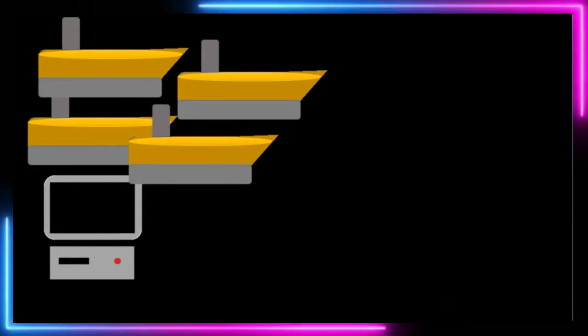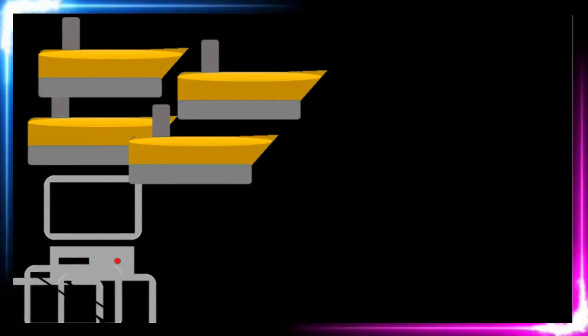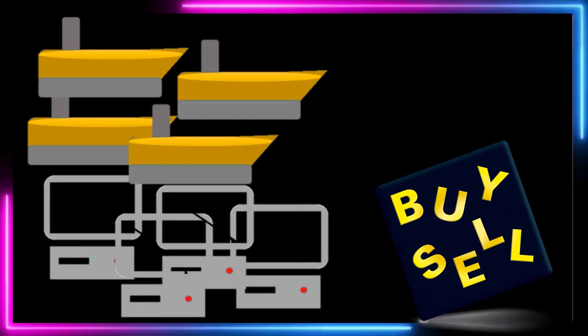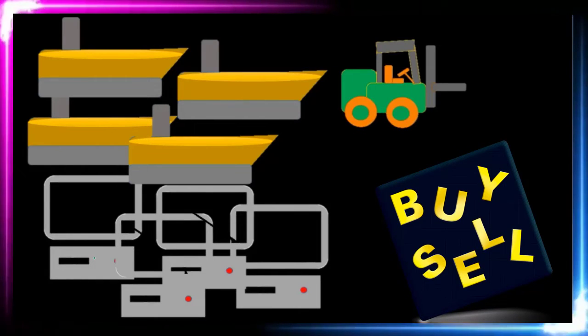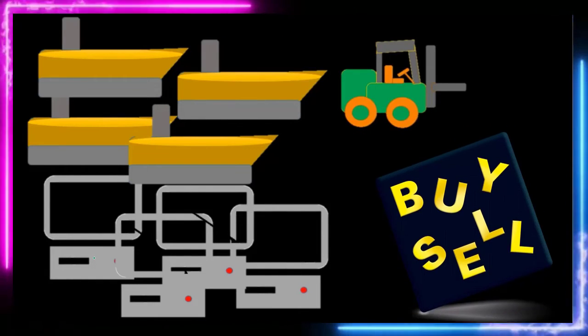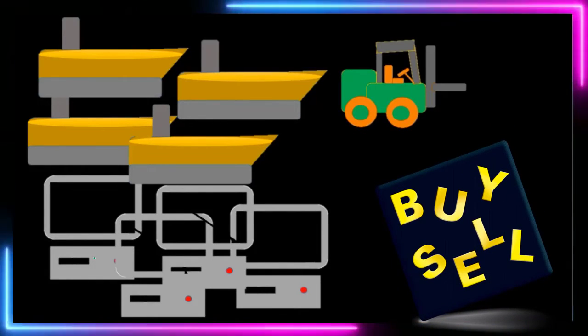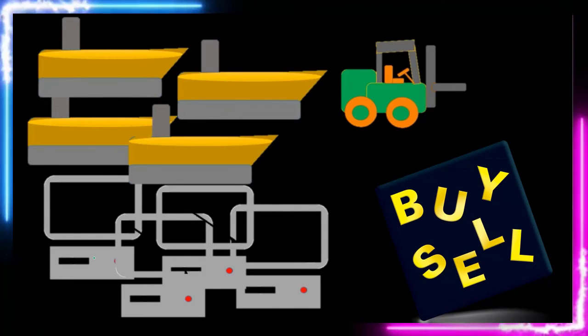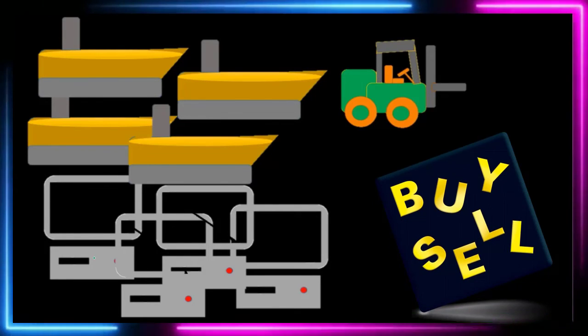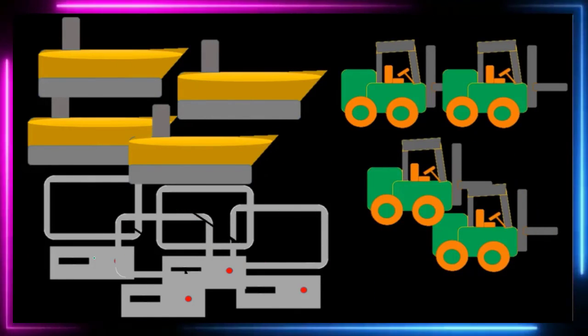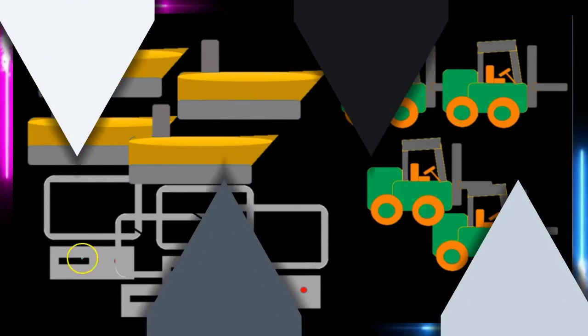We can think of the same for a computer — if we're using it for the business it's an asset, but if we're buying and selling computers it is inventory. Same thing for forklifts: if we just have the forklift and use it to help generate revenue, it's an asset; if we buy and sell forklifts, we're talking inventory.